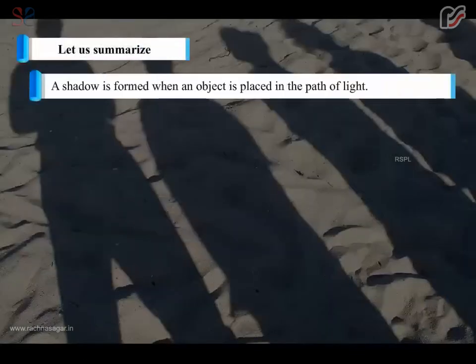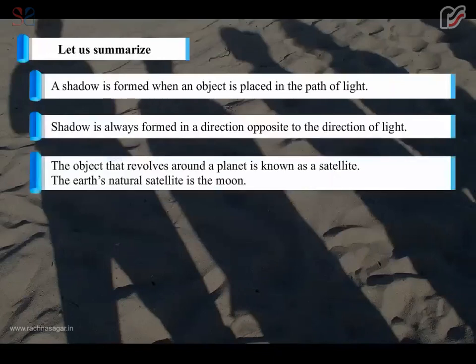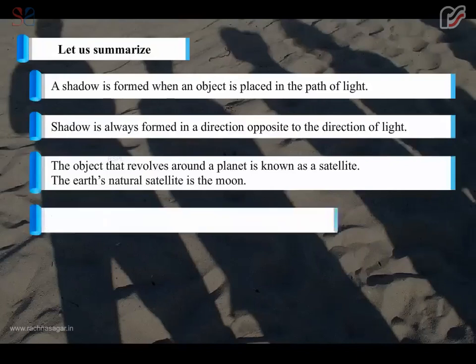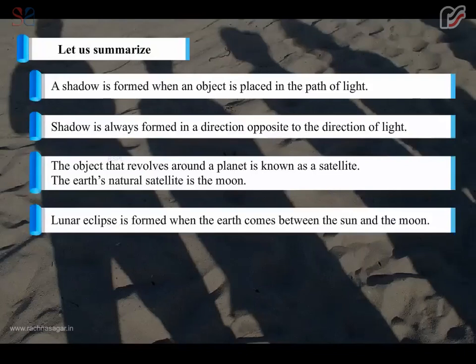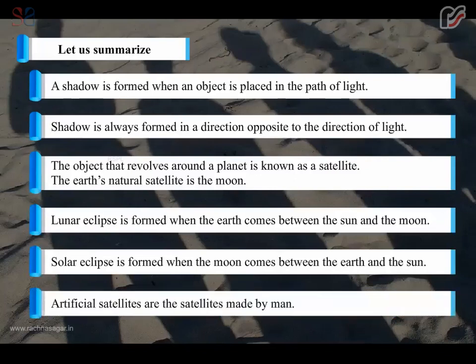Let us summarize. A shadow is formed when an object is placed in the path of light, and is always formed in a direction opposite to the direction of light. The object that revolves around a planet is known as a satellite. The Earth's natural satellite is the Moon. A Lunar Eclipse is formed when the Earth comes between the Sun and the Moon. A Solar Eclipse is formed when the Moon comes between the Earth and the Sun. Artificial satellites are the satellites made by man.